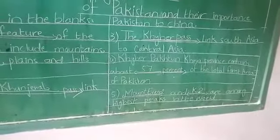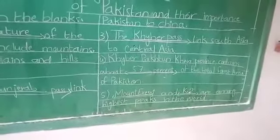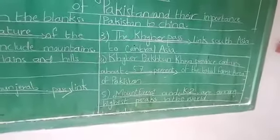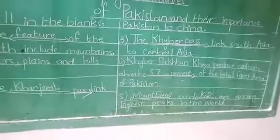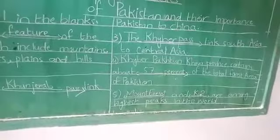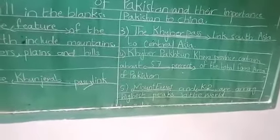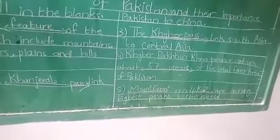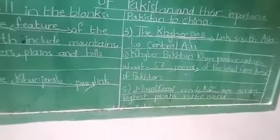Number 5: __ and __ are among the highest peaks in the world. Mount Everest اور K2 — یہ دونوں پہاڑ پوری دنیا میں سب سے highest peaks ہیں، بہت زیادہ اونچے ہیں۔ Answer: Mount Everest and K2 are among the highest peaks in the world.